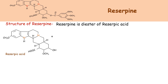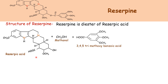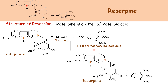The structure of reserpic acid contains the main skeleton with an indole nucleus, a saturated piperidine ring, one COOH group, two methoxy groups, and one OH group. The OH and COOH groups are at 1-3 position. Now we see the structure of reserpine. Reserpine is a diester of reserpic acid. Reserpic acid plus methanol plus 3,4,5-trimethoxybenzoic acid combine to give the structure of reserpine, which contains five methoxy groups, two ester groups, one indole nucleus, one secondary nitrogen, and one tertiary nitrogen.